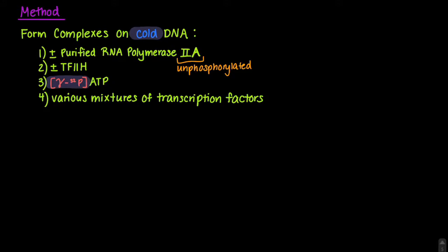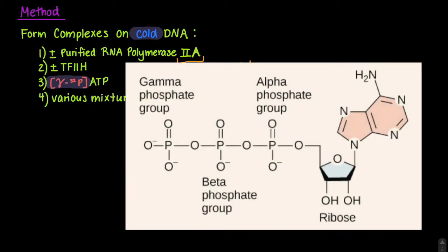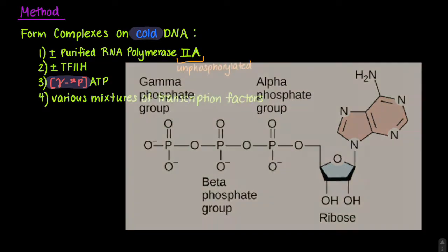Since we are primarily interested in the phosphorylation of RNA polymerase 2A, it makes sense to radioactively label ATP and not DNA. By doing this, we will only see things that are getting phosphorylated. Gamma labeling was necessary, as this will be the only phosphate transferred by the kinase in the phosphorylation reaction.